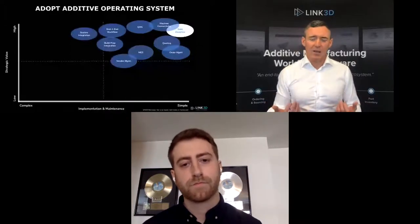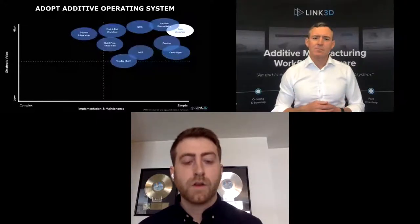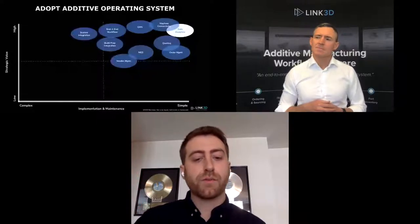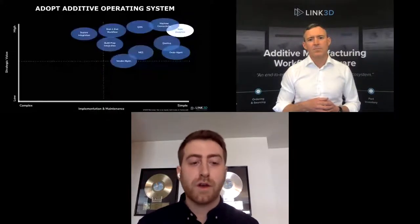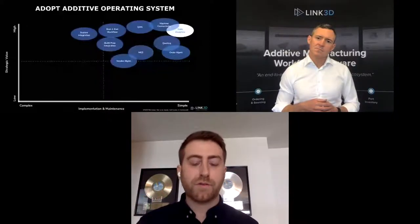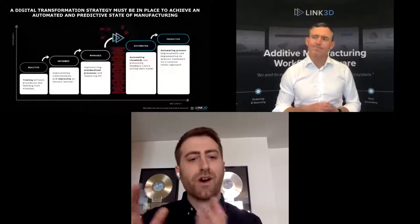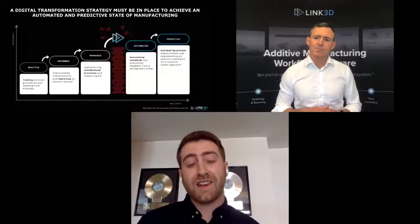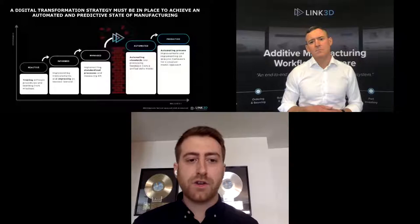We've talked about where we are today, but Link3D has also created a maturity model. Customers we speak with are typically in the reactive, informed, or managed stage, and we're trying to help them move to an automated and predictive stage. Many find themselves in the managed stage — with Excel spreadsheets for scheduling, email for orders, and their own data analytics — but it's not streamlined in one platform. People hit a wall trying to reach the automated and predictive stage without a system in place. Our goal is to help you get there through core applications, simulation, automation, and algorithms that help you predict situations rather than react to problems.